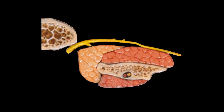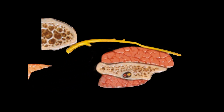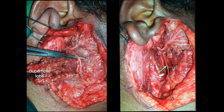In deep lobe tumors, we raise the superficial lobe of the parotid gland after exposing the facial nerve and its branches. We then dissect the facial nerve free from the deep lobe tumor and resect the tumor without injuring the facial nerve. In this picture, you can see the facial nerve and its branches after removing the superficial lobe of the parotid gland, and the facial nerve being separated from the deep lobe tumor. The second picture is taken after complete resection of the deep lobe tumor, with the facial nerve and its branches preserved.